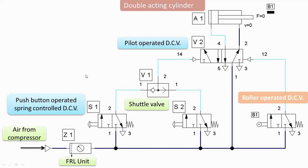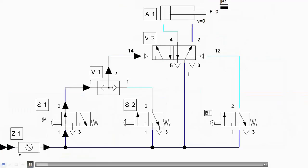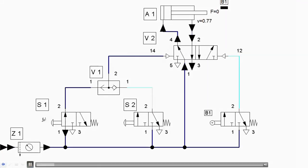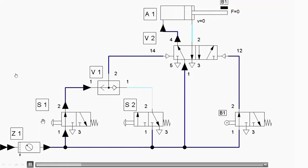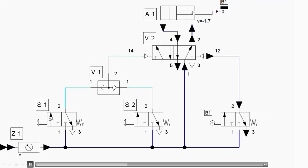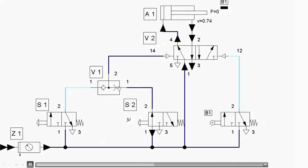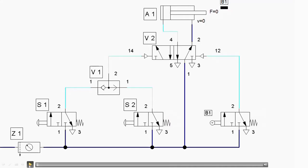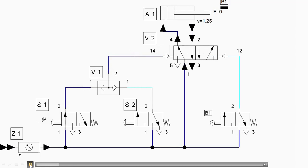Let us see with the help of animation how the motion can be obtained. We'll play the animation to get the idea — motion takes place when the push button is pressed for either S1 or S2. During the retraction stroke there is a negative value of velocity, and during the forward stroke there is a positive value of velocity.